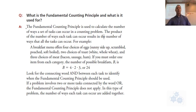What is the fundamental counting principle? That was in section 4.1. The fundamental counting principle is used to calculate the number of ways that a task can occur in a counting problem. The product of the number of ways that each task can occur results in the ways that all the tasks can occur. For example, the breakfast menu at a certain restaurant has four choices of eggs: sunny-side-up, scrambled, poached, or soft-boiled. It has two choices of toast and three choices of meat.